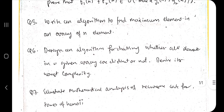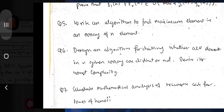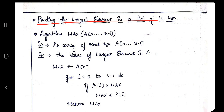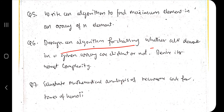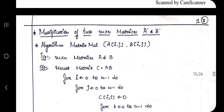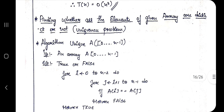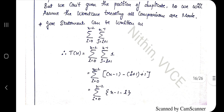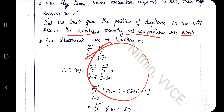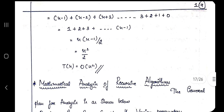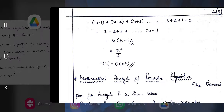The next question is: write an algorithm to find the maximum element in an array of n elements. Coming to page number 14, you can find the algorithm to find the largest element in a list of n elements. There is also a related algorithm for checking whether all array elements are distinct or not, and deriving its worst-case time complexity. The worst-case time complexity for distinct elements is O(n²).